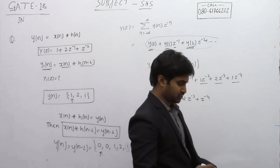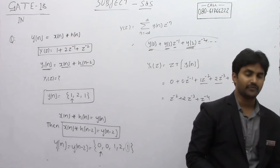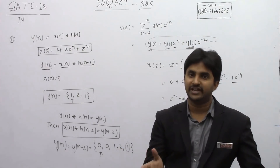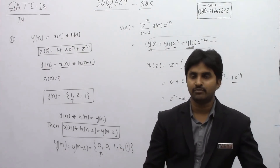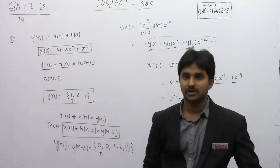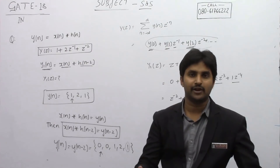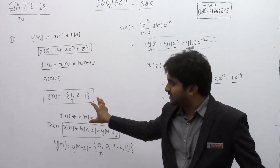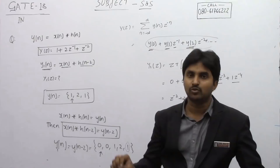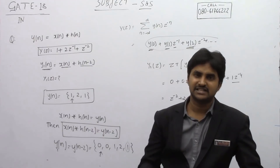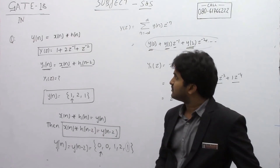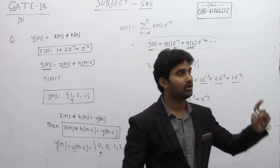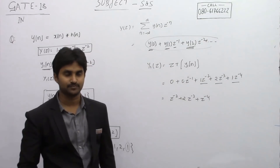It's a very simple question. What you need to know is how to write the Z-transform, how to write the inverse Z-transform, and the property of convolution — things you've learned in class. If you know these properties, it becomes straightforward. In case you have any doubt on this question, you can call on this particular number. Thank you.